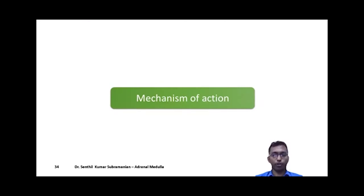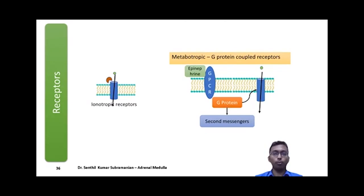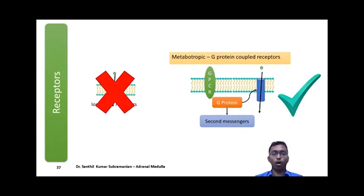Catecholamines act through adrenoreceptors, of which there are two types: alpha and beta. Alpha is subdivided into alpha-1 and alpha-2; beta into beta-1, beta-2, and beta-3, with various subgroups. All adrenoreceptors belong to metabotropic G-protein coupled receptors, in contrast to ionotropic receptors which are ion channels themselves. When stimulated, the G-protein may activate an ion channel or a second messenger to bring about the physiological actions of catecholamines.